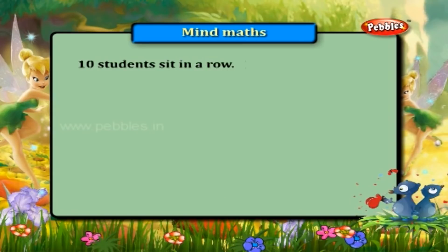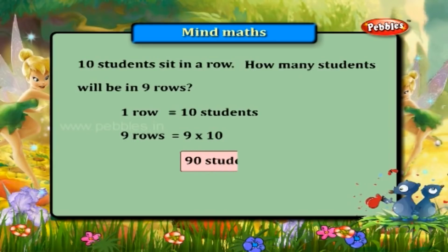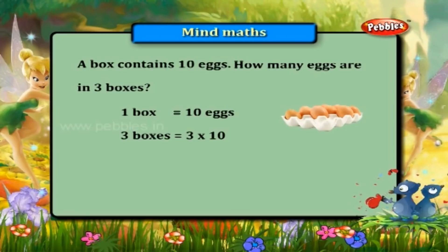Ten students sit in a row. How many students will be in nine rows? Number of children in one row is ten, therefore number of students in nine rows will be nine into ten, equal to ninety. A box contains ten eggs. How many eggs are there in three boxes? One box has ten eggs, so three boxes will have three into ten, equal to thirty eggs.